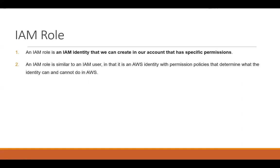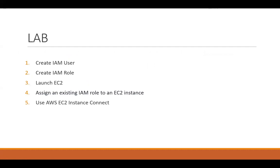I'll jump into the lab today. You can watch my previous video on IAM roles and users where I've detailed everything about user groups and roles — I'll paste the link in the description. In today's lab I'll create one IAM user and one role, log into the EC2 instance using that user's credentials, show what permissions are available, and demonstrate how to connect using EC2 Instance Connect.